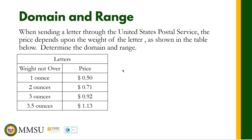So what is the domain? What is our input quantity here? Our input quantity is the weight — the weight of the letters sent through the United States Postal Service. Now, weight is a continuous quantity, meaning it is not strictly 1, 2, 3, or 3.5 — it can be something like 1.2, 1.3, 1.4, 1.5, and so on.